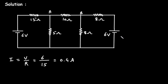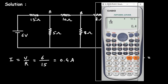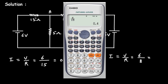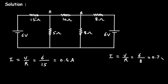Similarly, for the second source, I is equal to V upon R. Here the voltage is 6V and the resistance is 8 ohm, so 6 divided by 8 equals 0.75 ampere.